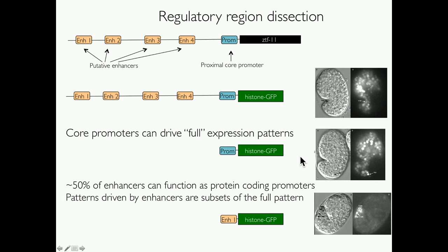Lastly, we tested 17 enhancers, cloning each individually in front of our GFP reporter. We saw that at least half of them not only can function as protein-coding promoters, but they also express with a pattern that is a subset of the full pattern.